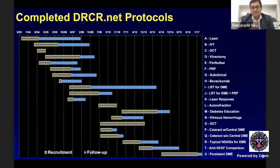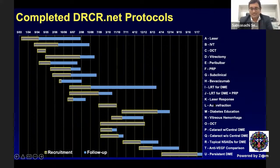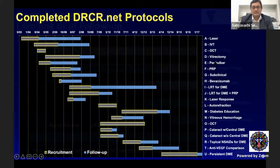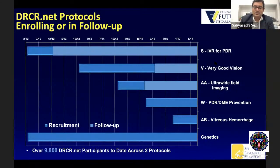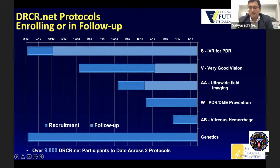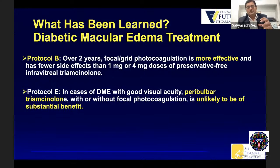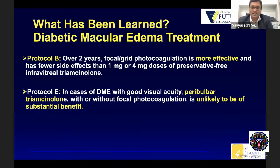These are some of the protocols which have already been completed from the DRCR.network — Protocol A on laser, Protocol B on IVTA, and many others. Some are still enrolling or in follow-up, such as intravitreal danibizumab for PDR and Protocol W, which has finished recruiting and some results have come out. They're also looking at genetics in diabetic retinopathy. What I'm going to tell you is the name of each protocol and what result it came up with, so that by the end we'll have one slide with almost all the key recommendations from the major DRCR.network studies.